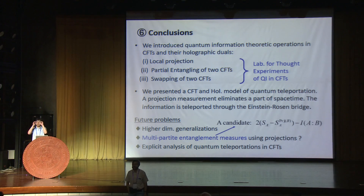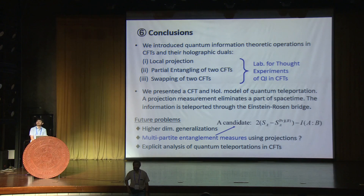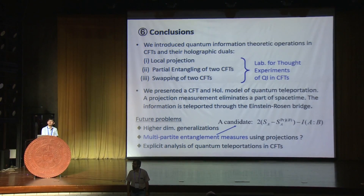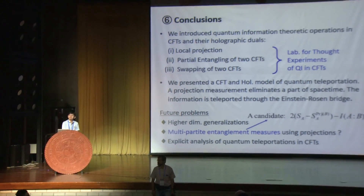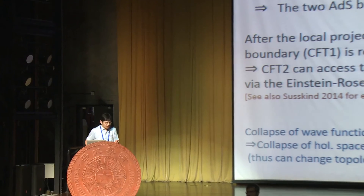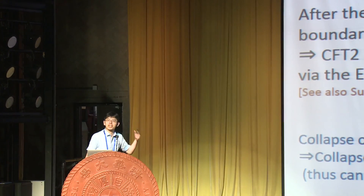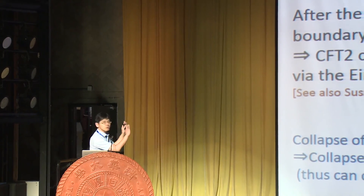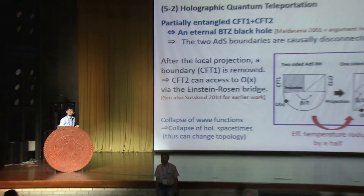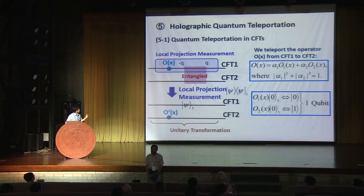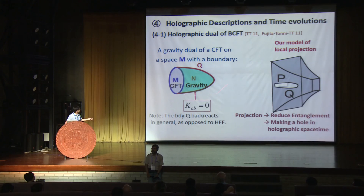Question: If you take the thermal field double state and do a local projection on one side, you remove the spacetime on the left side — so what does the spacetime look like? Do you enter the black hole and hit a singularity along some time-like surface? Answer: Once we do this projection, we resolve the Einstein equation with this boundary condition, which gives a single-sided AdS black hole — essentially half of the double-sided black hole. We resolve the Einstein equation; this is the basic framework of the holographic dual of the boundary conformal field theory.